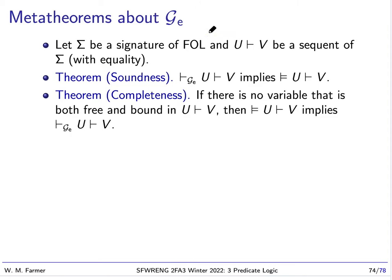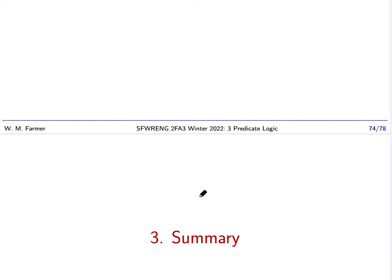So this system, G sub E, it's sound and it's complete. Remember G was sound and complete only for formulas that did not involve equality. G sub E is sound and complete for all formulas.